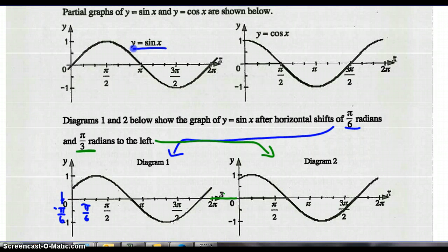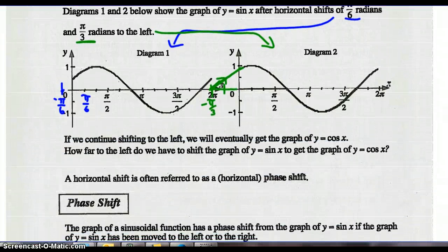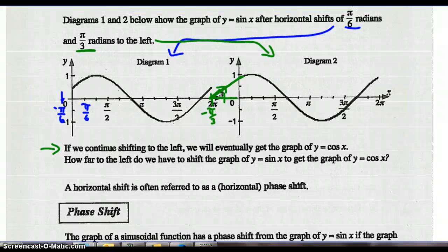Pi over 3 radians — here's 1 pi over 6, here's 2 pi over 6, which is pi over 3 negative. That's where sine would start. Sine used to start at 0 going up. Now we've shifted it pi over 3 units to the left; now it's starting at negative pi over 3 and going up. If we continue shifting to the left, we'll eventually get the graph of cosine x.